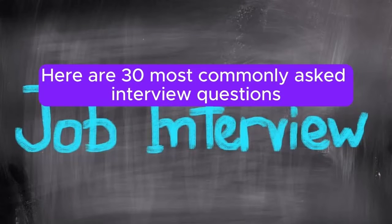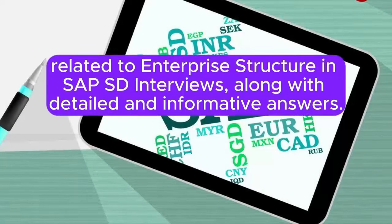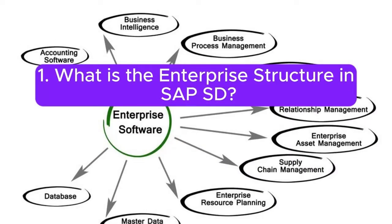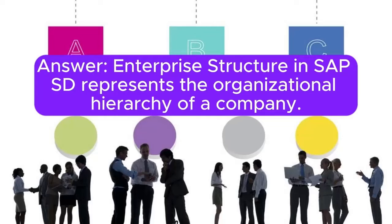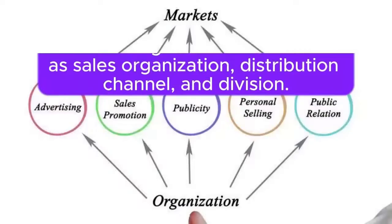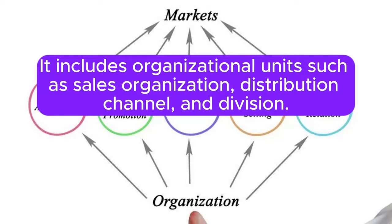Here are 30 most commonly asked interview questions related to enterprise structure in SAP SD interviews, along with detailed and informative answers. Question 1: What is the enterprise structure in SAP SD? Answer: Enterprise structure in SAP SD represents the organizational hierarchy of a company. It includes organizational units such as sales organization, distribution channel, and division.